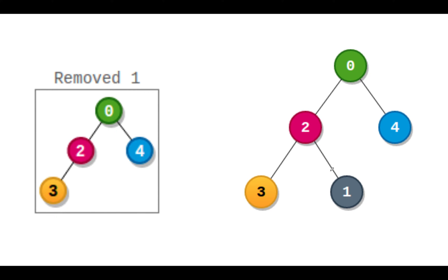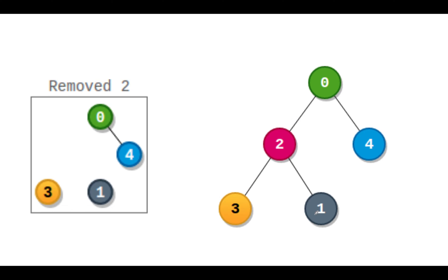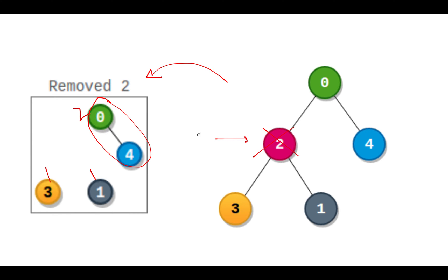Let's remove node one from the tree. After removal, there is only one part remaining with four nodes, so the score of node one is four. Next, we remove node two. The tree is divided into three parts: the first part has a count of two, the second has a count of one, and the third has a count of one. The score is the multiplication of these three values: two into one into one, which is two.